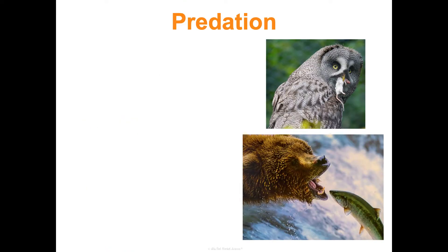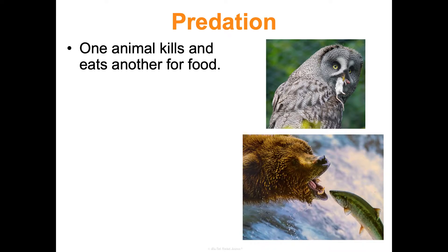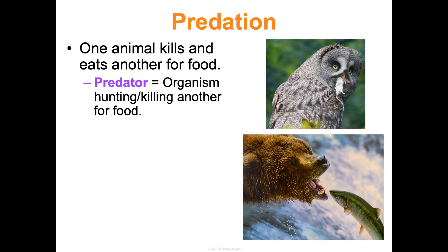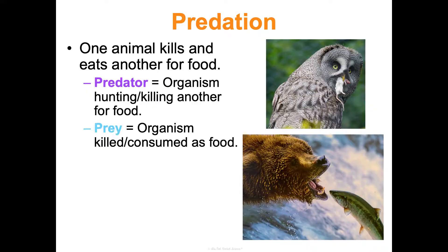First is predation. This is more of a short-term interaction than a relationship, because this is when one animal kills and eats another for food. The predator is the one doing the hunting or killing, and the prey is the one being killed or consumed as food. There are a ton of different examples — here are a few pictures.